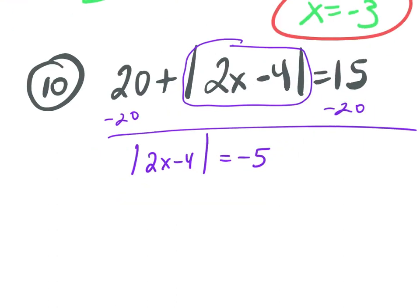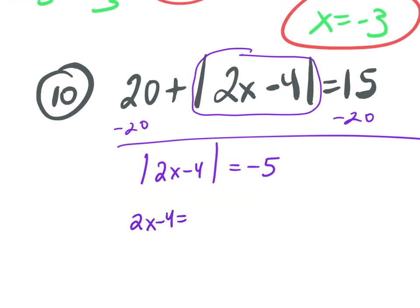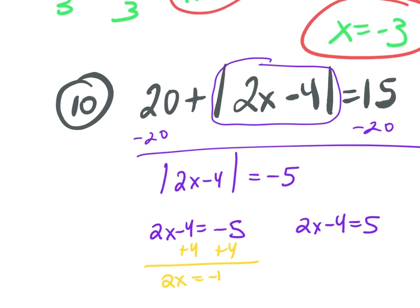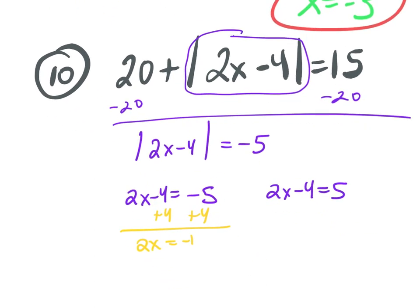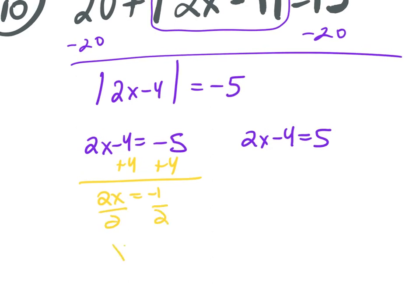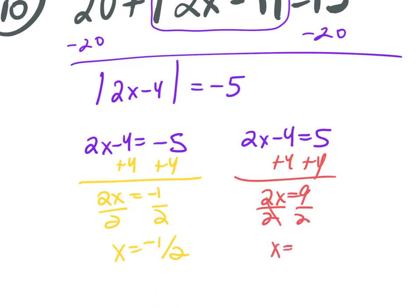If you continue to solve anyway, you would write 2x minus 4 equals negative 5 and 2x minus 4 equals positive 5. Adding 4 to both sides of the first: 2x equals negative 1, divide by 2, x equals negative one-half. Adding 4 to both sides of the second: 2x equals 9, divide by 2, x equals 9 over 2. Some of you would get to this point and say, I got two answers — but that's why you have to check.